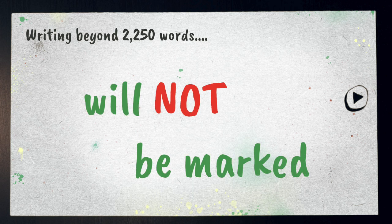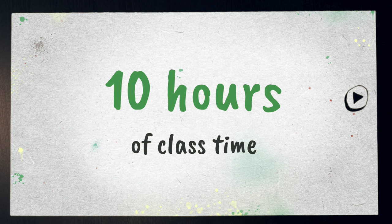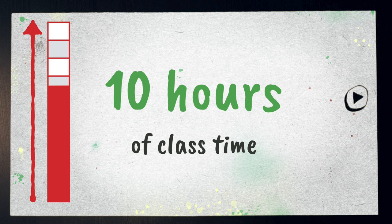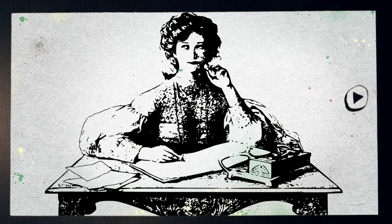Your teacher is expected to give you 10 hours of class time to work on the IA. That teaching time includes guiding you to choosing a research area, discussing the animal experimentation policy, discussing your progress, and answering questions. All in all, that doesn't leave a lot of time to work on the assignment, so you will have to spend a reasonable amount of time working independently if you want to do a decent job.